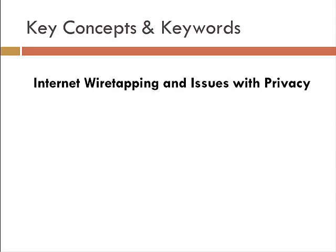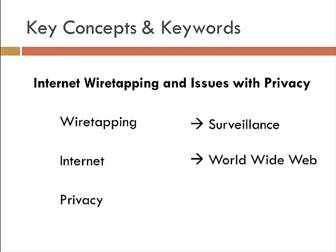For example, if I was interested in investigating the implications of internet wiretapping in regards to personal privacy here in the United States, it's important in this first step to really look at the concepts I'm investigating. I'm focusing most of my energy on wiretapping, specifically on the internet and its impact on privacy, and it's also important to think of additional keywords I might use when I search — for instance, surveillance and the World Wide Web.